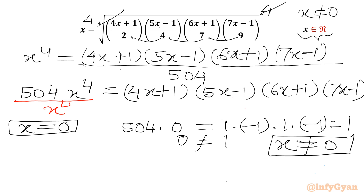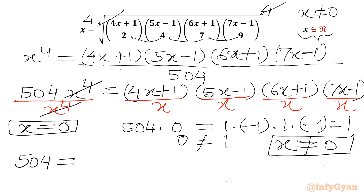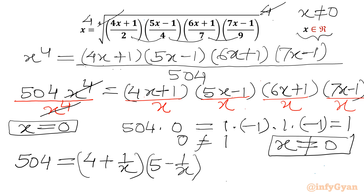Now I will divide both sides by x power 4, dividing each factor by x. From the LHS we cancel x⁴. So the equation becomes 504 = (4 + 1/x)(5 - 1/x)(6 + 1/x)(7 - 1/x).